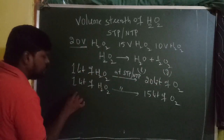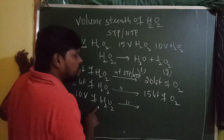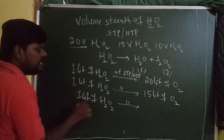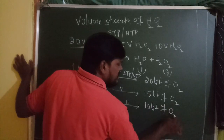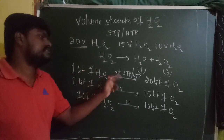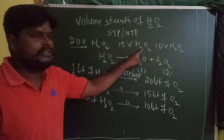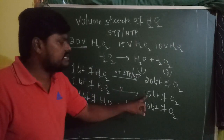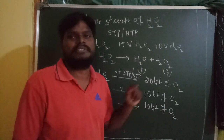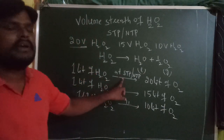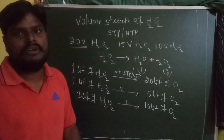And 10V of H₂O₂ means that at STP or NTP, one liter of H₂O₂ releases 10 liters of oxygen. So to summarize: 20V H₂O₂ → 1L H₂O₂ releases 20L O₂; 15V H₂O₂ → 1L H₂O₂ releases 15L O₂; 10V H₂O₂ → 1L H₂O₂ releases 10L O₂. All at STP or NTP conditions.